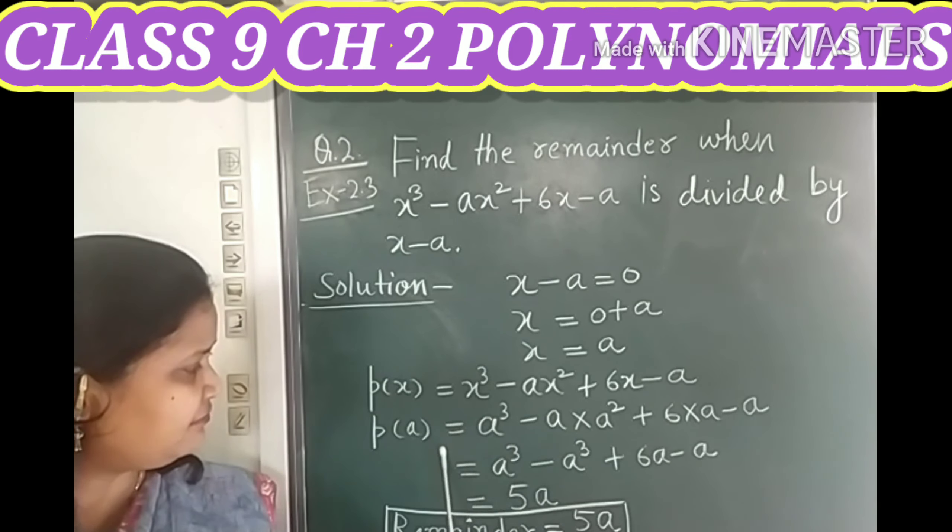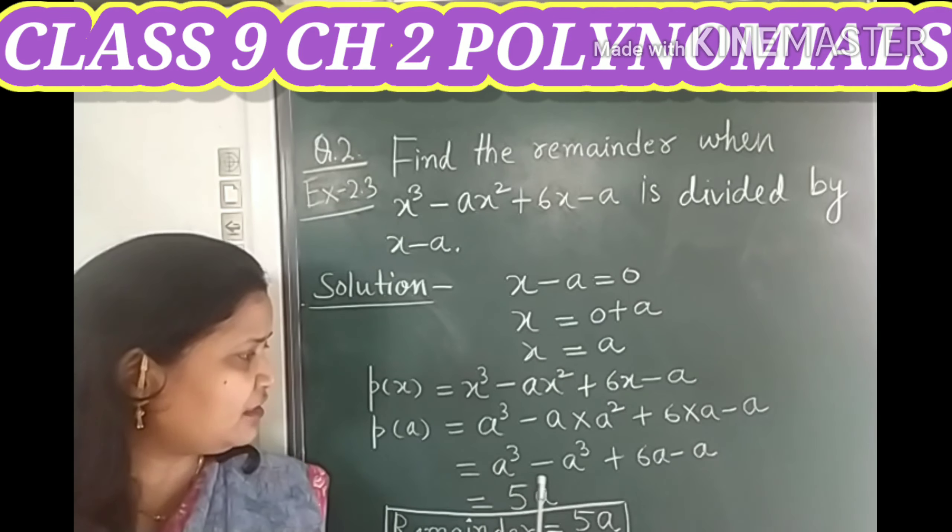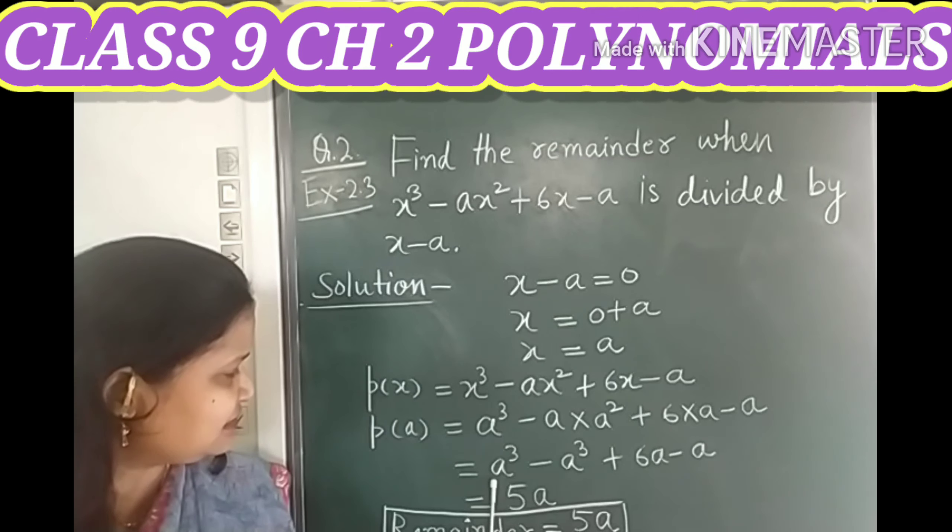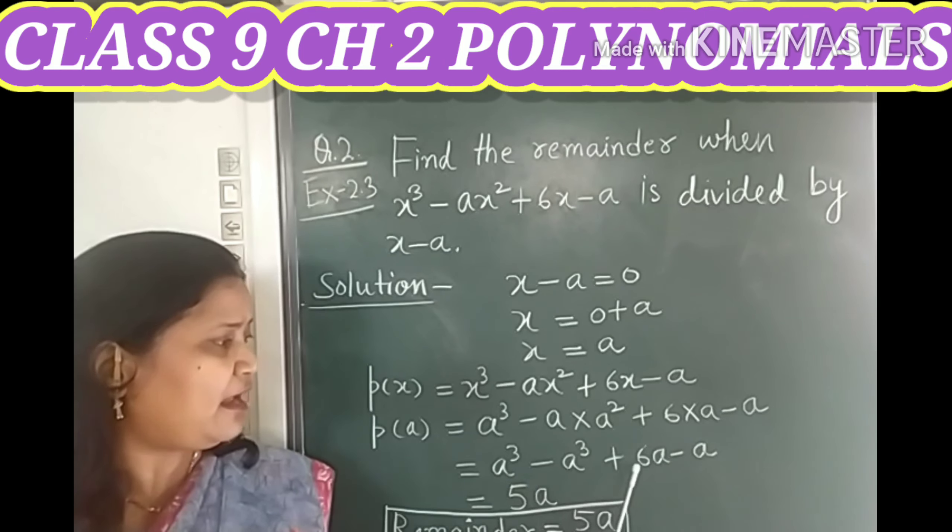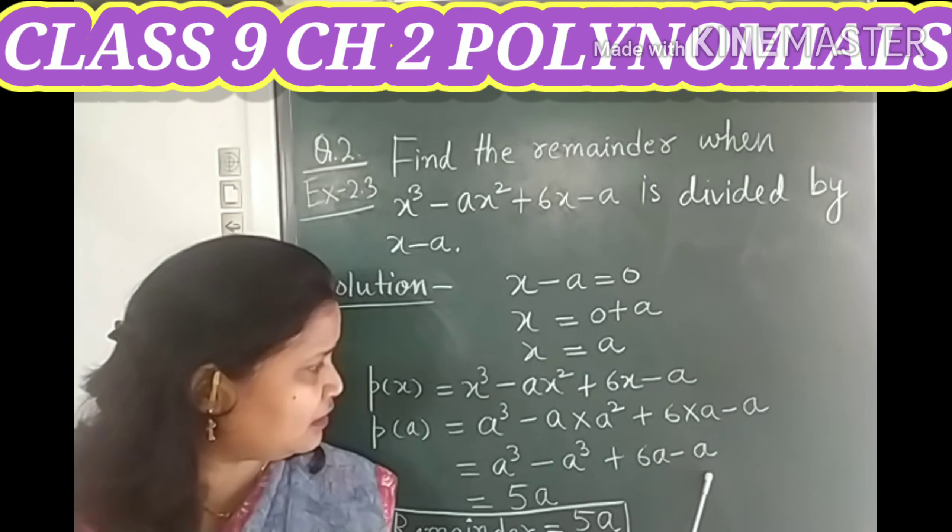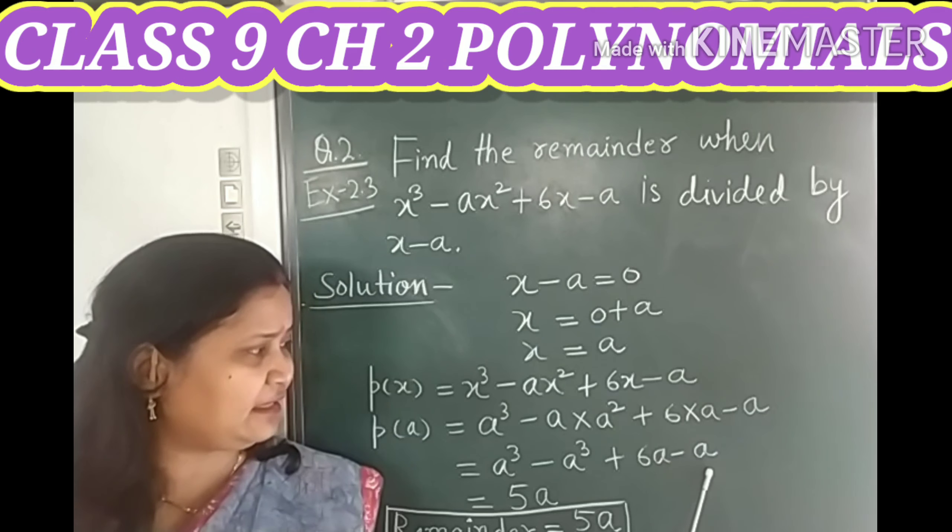Children, you can see our whole expression now in terms of a. So we can solve it very easily. Now this a³, this plus a³ and this minus a³ are cancelled out and when you solve these remaining terms plus 6a and minus a, these both are like terms so we can subtract a from 6a.